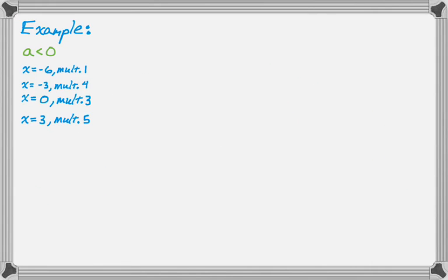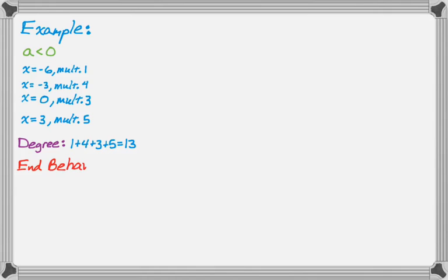Let's take a look at another one. Here a is less than 0 — a negative leading coefficient — and negative 6 has multiplicity 1, negative 3 has multiplicity 4, 0 has a multiplicity of 3, and 3 has a multiplicity of 5. Adding up the multiplicities: 1 plus 4 plus 3 plus 5 gives a degree of 13 — odd degree with a negative leading coefficient. So the end behavior goes from high to low: it starts high and ends low.